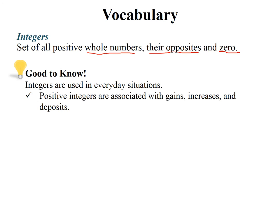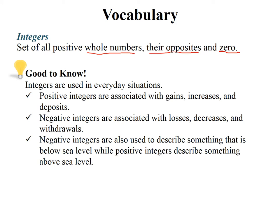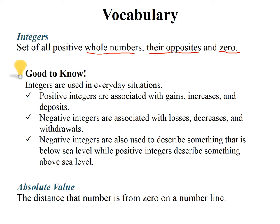So these are just some tips good to know. Integers are used in everyday situations. Positive integers are usually associated with gains, increases, and deposits, and that's talking money. And negative integers are associated with losses, decreases, and withdrawals. Negative integers are also used to describe something that is below sea level, while positive integers describe something above sea level. So we use them to describe a distance a lot of the time.